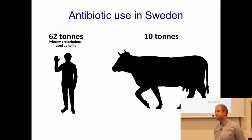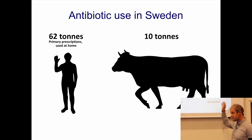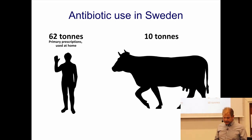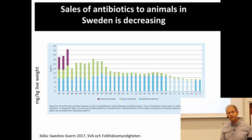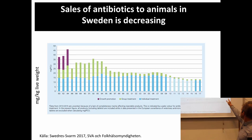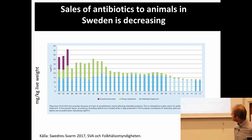In Sweden, antibiotic use in humans is considerably larger than antibiotic use in animals, as you can see from this figure. The animals that get the most antibiotics in Sweden are cows, and it's primarily penicillin-like antibiotics given to them — not very broad spectrum, but rather narrow spectrum penicillins, which is good. If we take a look at the historical use or sales of antibiotics to animals in Sweden, we have a pretty clear pattern. This slide shows usage from 1980 to 2017, expressed in milligrams per kilogram live weight, so it's adjusted for the size of the animals.